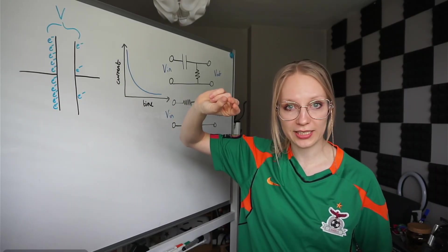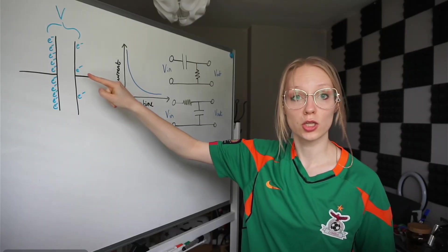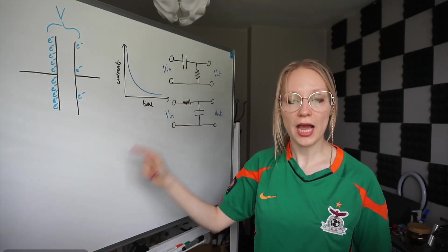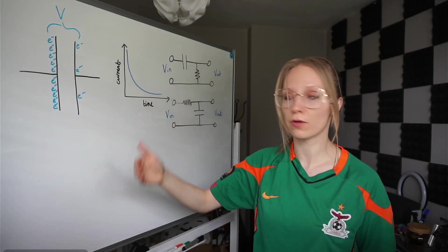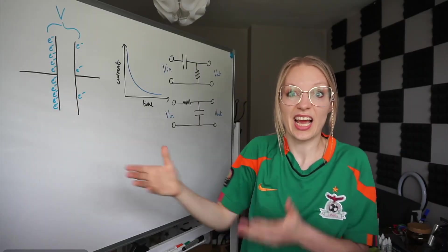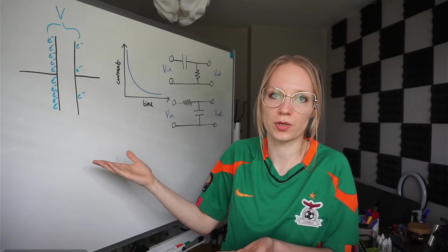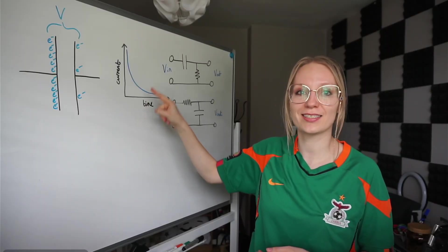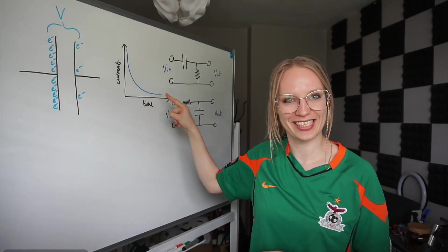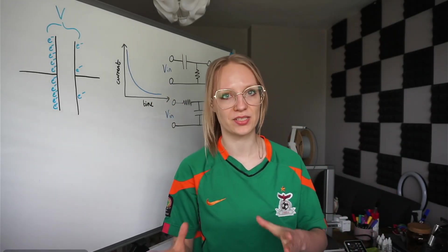So initially when you first click the switch, there's loads of current going through. But as time goes, more and more of the electrons are built up on the other side, and you're basically losing current. You don't have as much electrons to work with. And as time progresses, you have less and less current. So that's the basic principle of how a capacitor works.